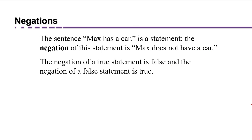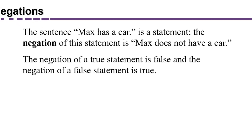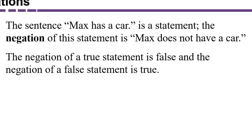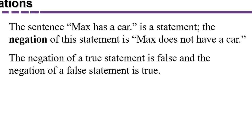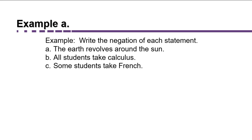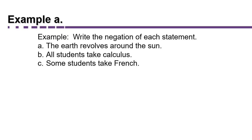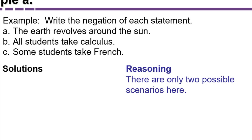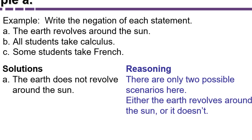Now let's talk about how to negate a statement. For example, 'Max has a car' is a statement, and its negation is 'Max does not have a car.' The negation of a true statement is false and the negation of a false statement is true. For part A: 'The earth revolves around the sun.' There are only two possible scenarios — either it does or it doesn't. So the negation is: 'The earth does not revolve around the sun.'